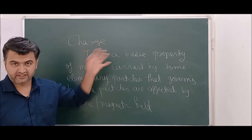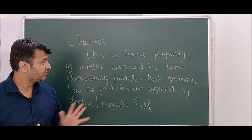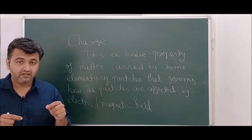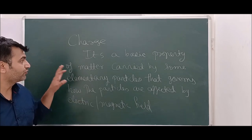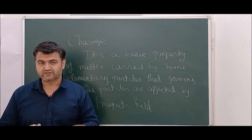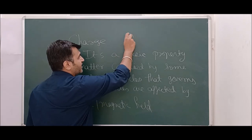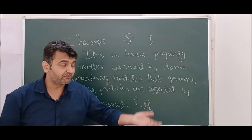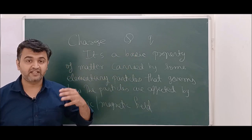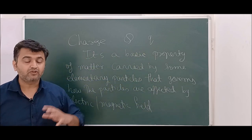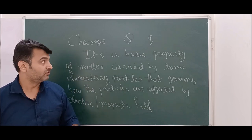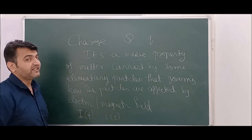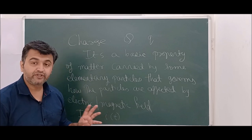What is electric charge? It is a basic property of matter carried by some elementary particles that governs how the particles will be affected when you have an electric or magnetic field. Charge is usually of two types: positive charge and negative charge. Charge is usually denoted by Q or small q. The rate of change of charge — that means dQ/dt — is called the current. So the rate of flow of charge is the current, denoted by i(t), and it equals dQ/dt.